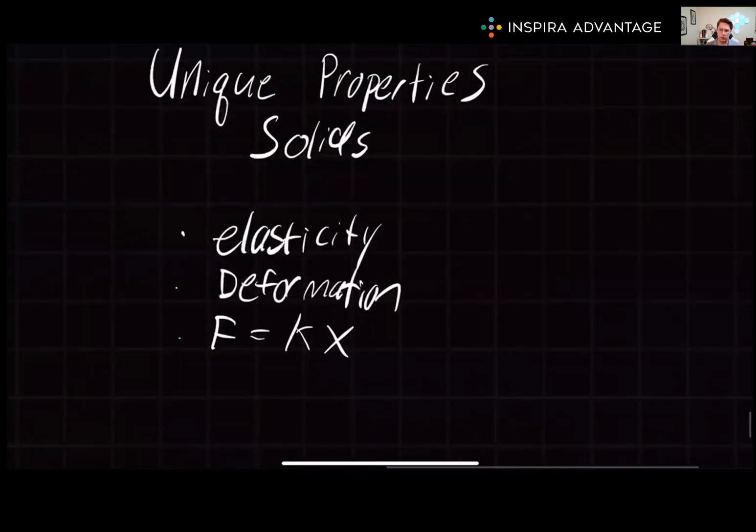For solids, we can explore properties such as elasticity and deformation. Elasticity is the ability of a solid to return to its original shape after being deformed. Deformation occurs when a force is applied to a solid causing it to change shape, like stretching or squishing something. When a solid is returning to its original shape, the deformation is said to be elastic. If the deformation is permanent, the solid has undergone plastic deformation.